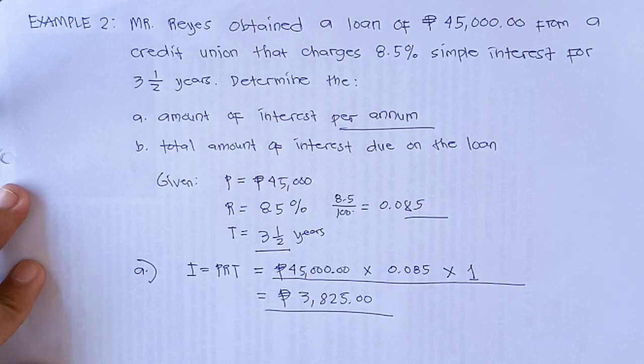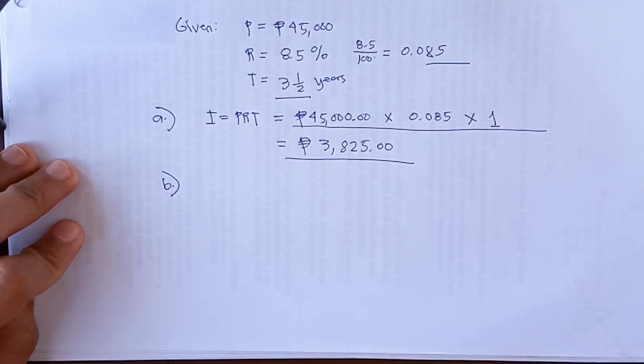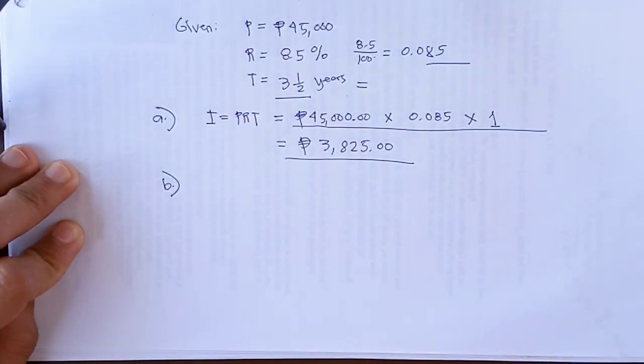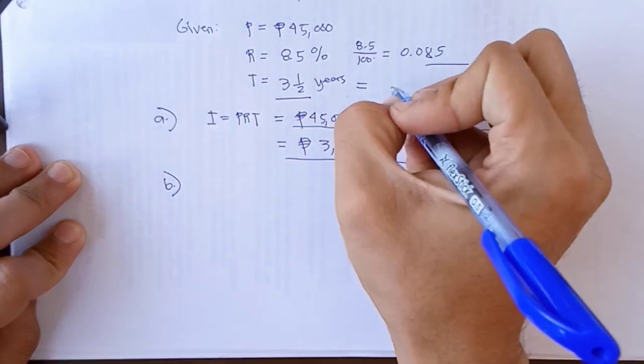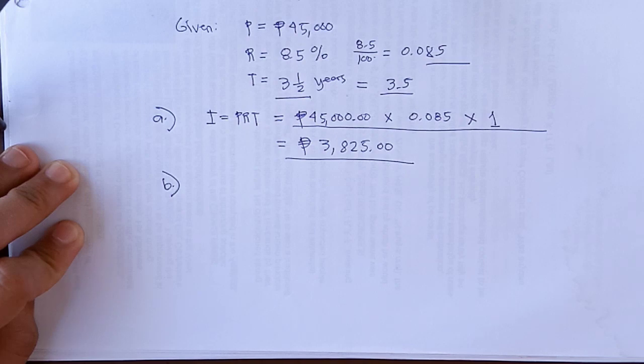So let's move to letter B. For letter B, the question is the total amount of interest due on the loan. Same formula to use, of course. But let's just convert this into decimal. So that is equal to 3.5. That's the time to use because the question is the total amount of interest.